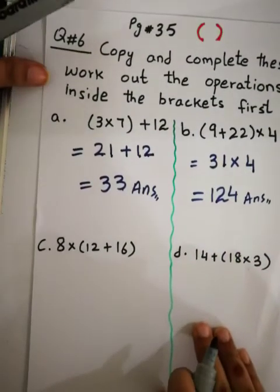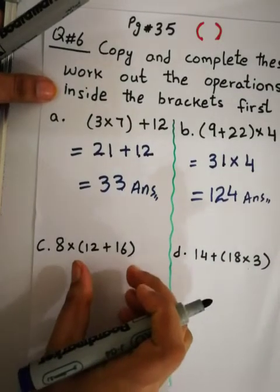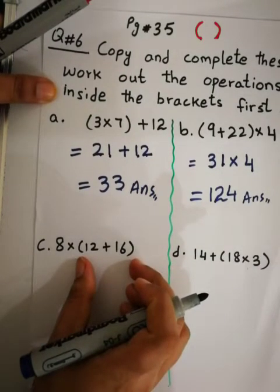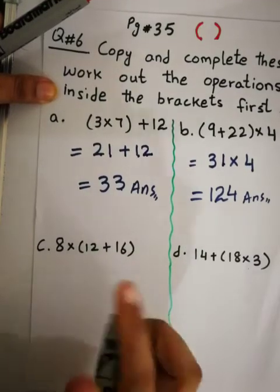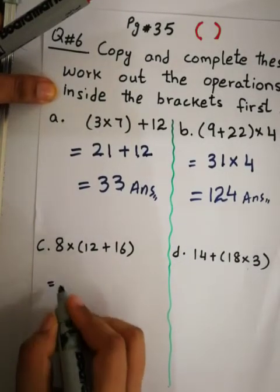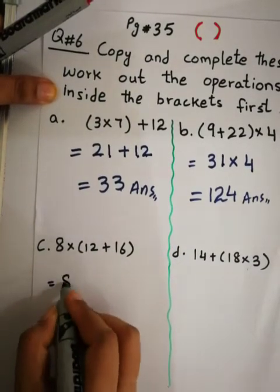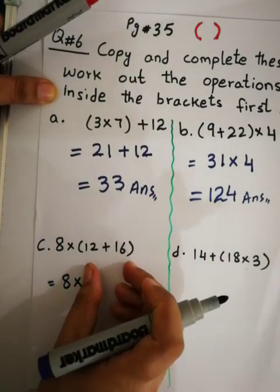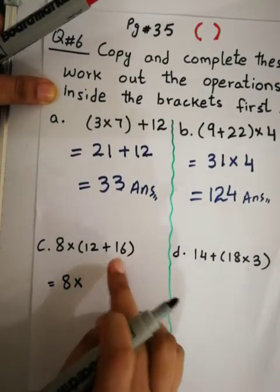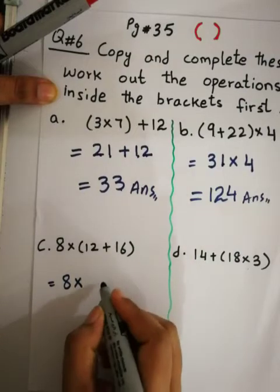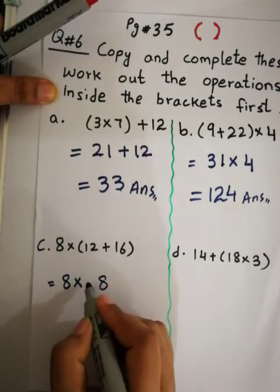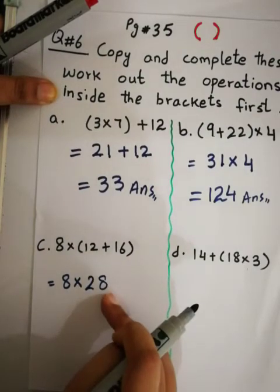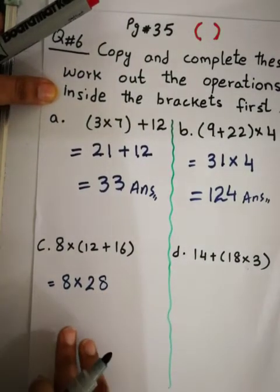Come to part c. Here what is in the round bracket is 12+16, so we solve that first. The 8 outside comes down as it is. 12+16: 2+6=8, 1+1=2, so 12+16 = 28.